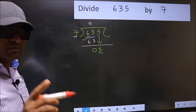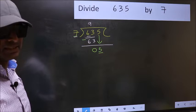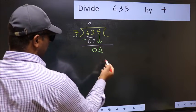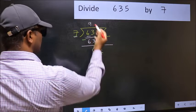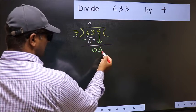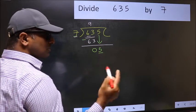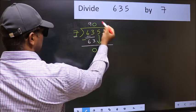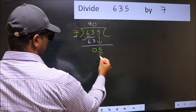Instead, what you should think of doing is, what number should we write here? If we take 1, we will get 7, but 7 is larger than 5. So what we should do is we should take 0. So 7 into 0, 0.